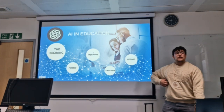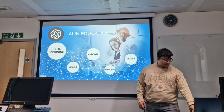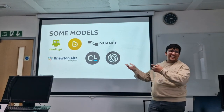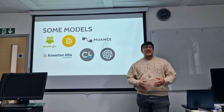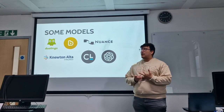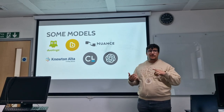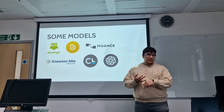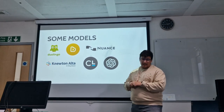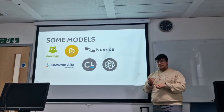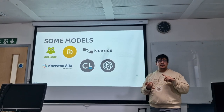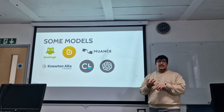I'd like to talk about some models of AI in education. Duolingo is an app that helps you study other languages — it has more than 40 languages and includes speech recognition and grammar recognition to help you improve. Babbel is a software that allows you to learn some basic knowledge in mathematics and English literacy.